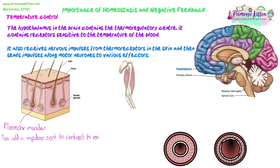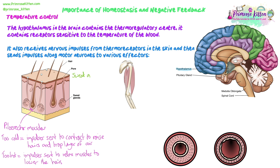If you are too cold and the hypothalamus detects this, action potentials are sent down motor neurons to the pyloerector muscles, which contract and pull up your hairs to stand straight — this gives you goosebumps. Raising the hairs traps a layer of air that insulates you around that layer of skin. This is left over from when we had more hair on our bodies; it works better with more body hair, as seen in other mammals. If you are too hot, the impulses tell those muscles to relax and the hairs are lowered since we don't need that insulating layer of air.